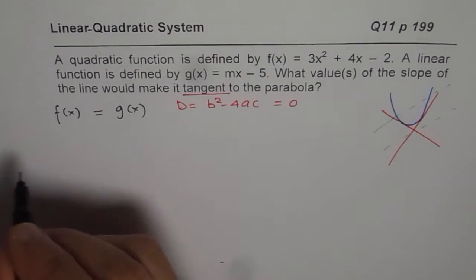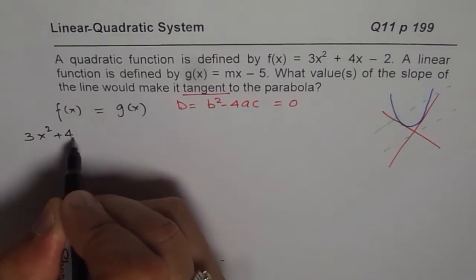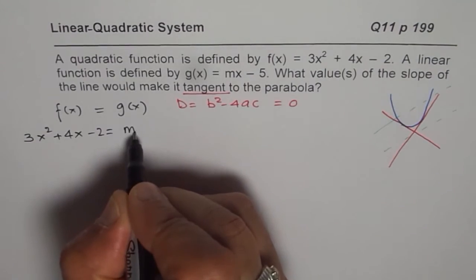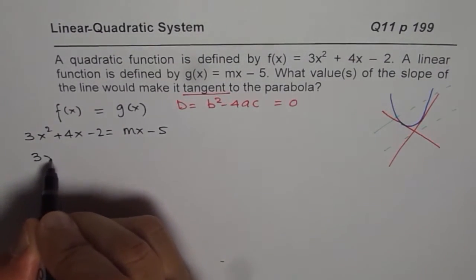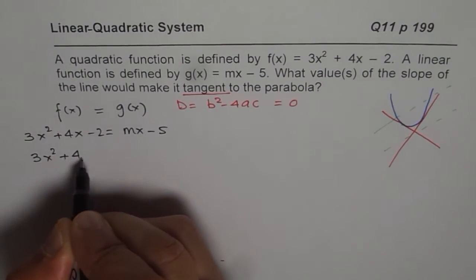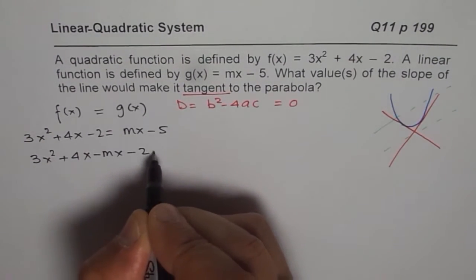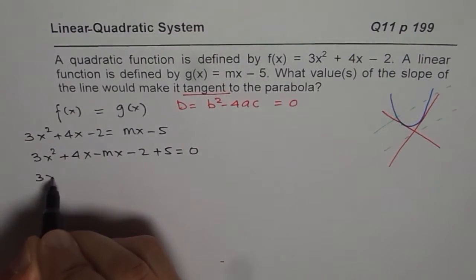Okay, and here is my solution. So let us begin by writing the equations. It is 3x square plus 4x minus 2, that is f(x) and g(x) is mx minus 5. Bring them all together. So we have 3x square plus 4x minus mx. We have minus 2 plus 5 equals to 0.